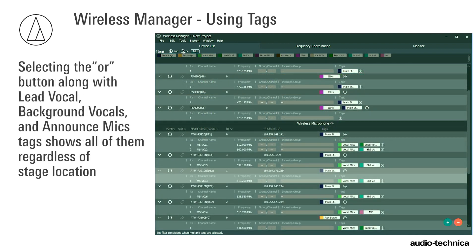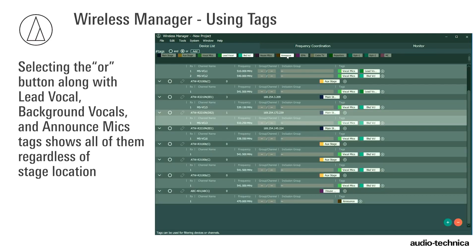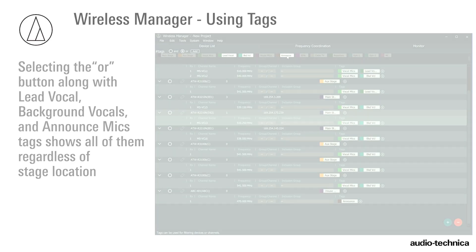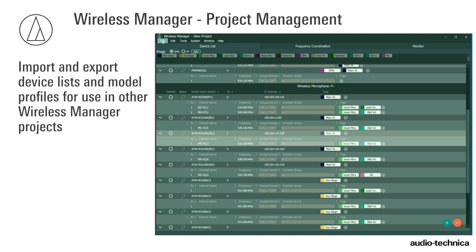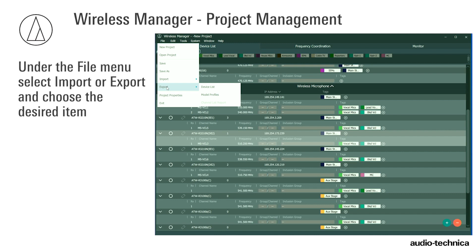Selecting the AND button and Vocal mics tag will show a list of all vocal microphones used at the main stage. Select OR, then Lead Vocal, Background Vocals, along with Announce mics to show all of them regardless of stage location. Device lists and model profiles can be imported and exported for use in other Wireless Manager projects using the Import and Export functions under the File menu.